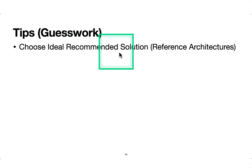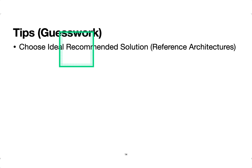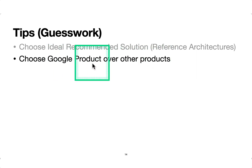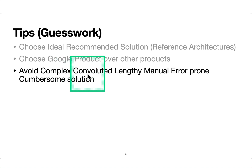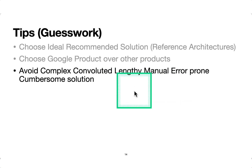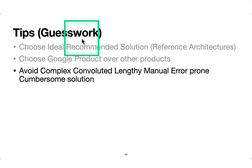As a guesswork tip when you're not sure: choose the ideal solution — basically the reference architectures. Choose Google products over other products. If you've studied reference architectures, go with the ideal solution. If it's a competition between a Google product and another product, choose the Google product. Also try to avoid complex, convoluted, lengthy, manual, error-prone, cumbersome solutions — like spinning up virtual machines, writing scripts, connecting too many services. If you know a managed service exists, go with that.